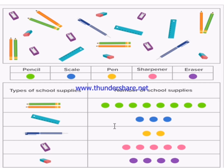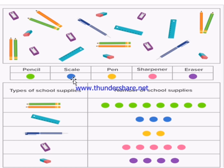Here there is a picture. We can see that some educational materials are provided. We can see pencils, scale, eraser, sharpener, and pen — five items in total. Now suppose pencil is represented with green color, scale with blue color, pen with yellow color, sharpener with pink color, and eraser with purple color. With these colors we can describe these items.